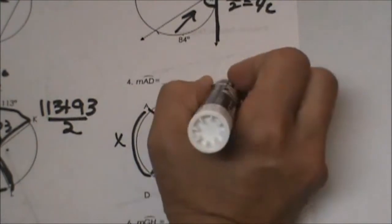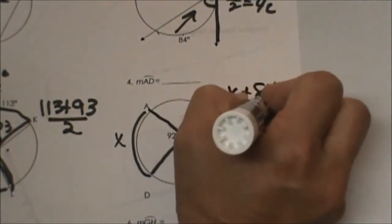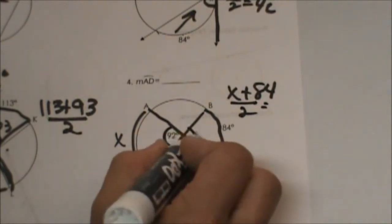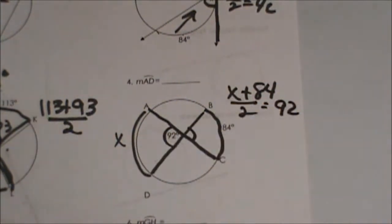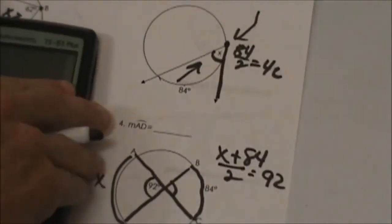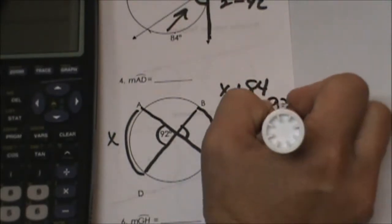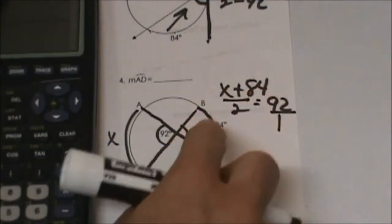So let's take the bowtie rule. X plus 84 all divided by 2 equals our angle 92 in the middle of the circle. It is not central so don't quote me on that. So let's solve that by just doing a cross product. I like to stick the 92 over 1 and do a cross product.